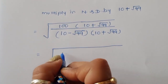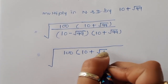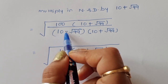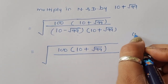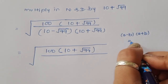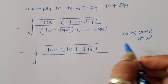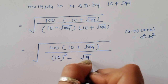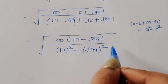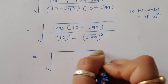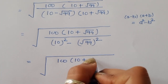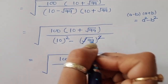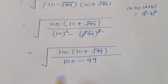So we can write this as 100 times (10 plus √99) divided by (10 minus √99)(10 plus √99). Now (10 minus √99)(10 plus √99) follows the formula (a minus b)(a plus b) equals a² minus b², where a is 10 and b is √99. So we get 10² minus (√99)², which is 100 minus 99, giving us 1.